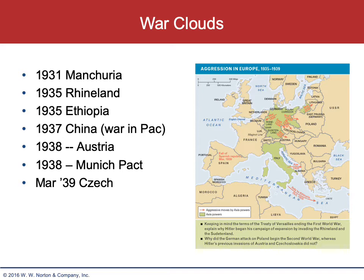In 1939, Hitler simply ignored the whole agreement, taking the rest of Czechoslovakia. The Slovak area was kept as a Nazi puppet regime. Hitler started to consolidate power within his army corps — the SS got more control over military operations, and the more traditional Prussian Junker element in the officer corps was quieted.